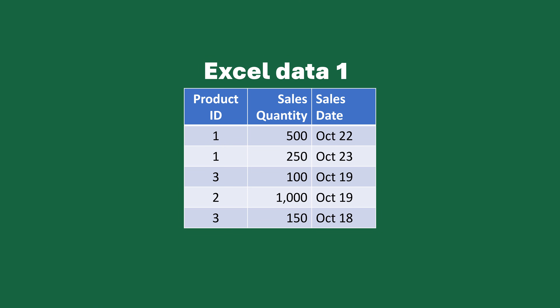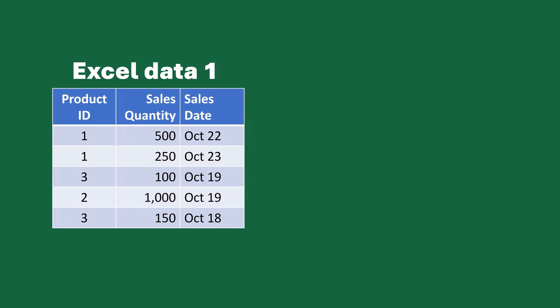Here's a scenario that someone might run across. I made a very simplistic sales table of data you might have in Excel. We have product IDs on the left-hand side — that's a product we've sold — along with the quantity and the date. For example, product 1 was sold for 500, and product ID 1 again for 250, and so on. This is something you would look at and why you might want to use a VLOOKUP or XLOOKUP function.